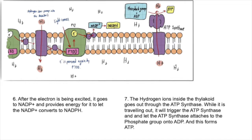As I said before, the hydrogen ions were pumped into the thylakoid. If it can come in, it can go out too, right? So when it wants to go out, it will go through the ATP synthase. While it is traveling out, it will trigger the ATP synthase and let the ATP synthase attach a phosphate group onto ADP, and this forms ATP.